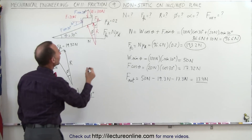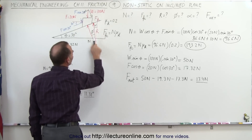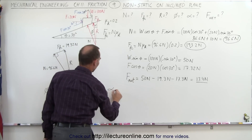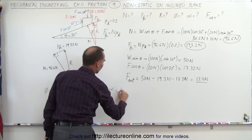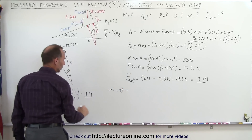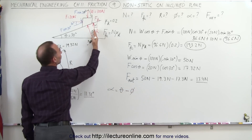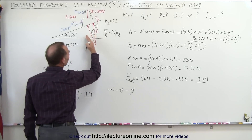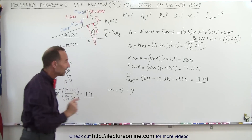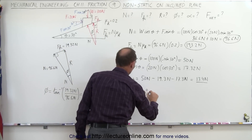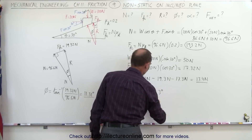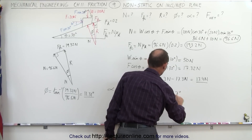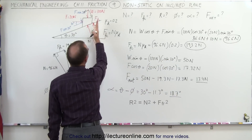Finally, we want to find angle alpha — the angle between the vertical and the reactionary force. Alpha equals theta minus phi. In this case the resultant force is between the two reference directions, so we subtract: alpha equals 30 degrees minus 11.3 degrees, which equals 18.7 degrees. That is the angle between the resultant force and the vertical.